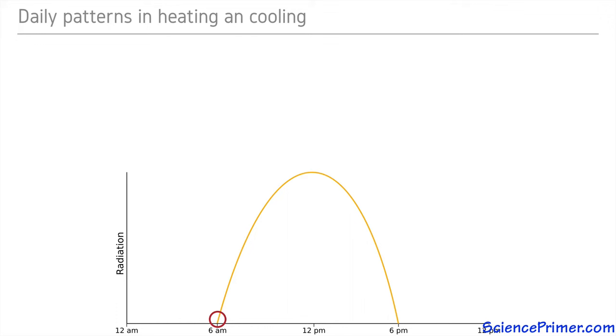That is, temperature would be lowest right at dawn, it would rise until solar noon, and then drop as the sun went down. But that is not what we see.